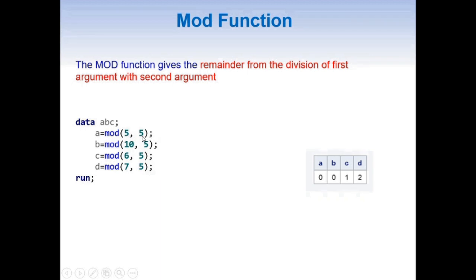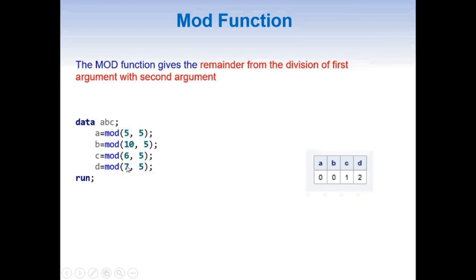In the first case, MOD(5, 5) divides 5 by 5 and the remainder is 0. In the second case, MOD(10, 5) also gives a remainder of 0. Whereas MOD(6, 5) — dividing 6 by 5 — is not exactly divisible and gives a remainder of 1. And MOD(7, 5) is also not exactly divisible by 5, giving a remainder of 2.